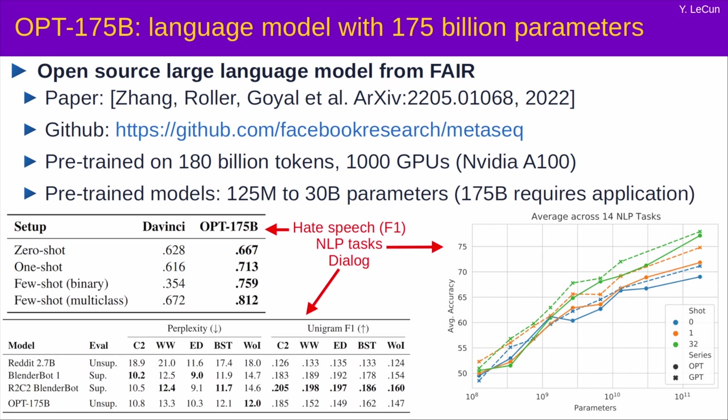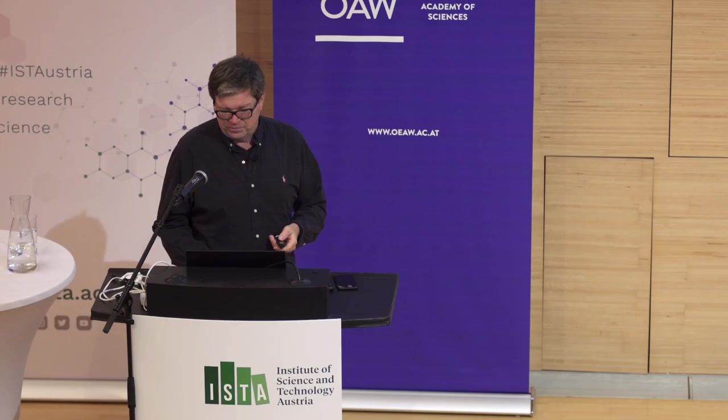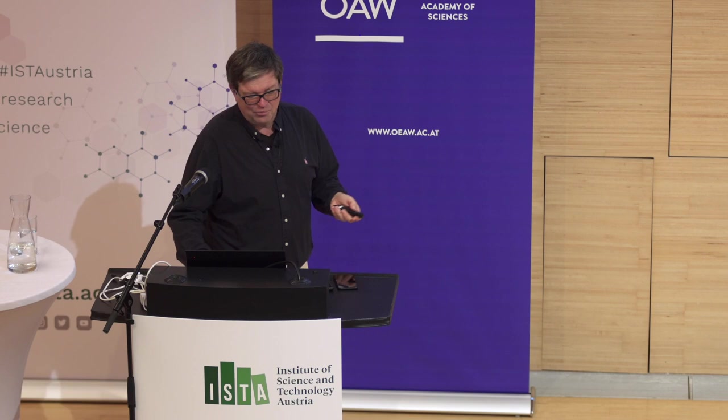So, this is a very large system that was trained by my colleagues at FAIR. And it has 175 billion parameters, adjustable knobs. It's one of the largest in the world of that type. There's another one from OpenAI and a couple from Google as well. It's been trained with 180 billion words, essentially. Tokens that are kind of like words. And that requires enormous supercomputers. But once you've pre-trained the system to basically complete blanks in text, it works really well for doing things like hate speech detection or various tasks in natural language processing or dialogue systems or translation.